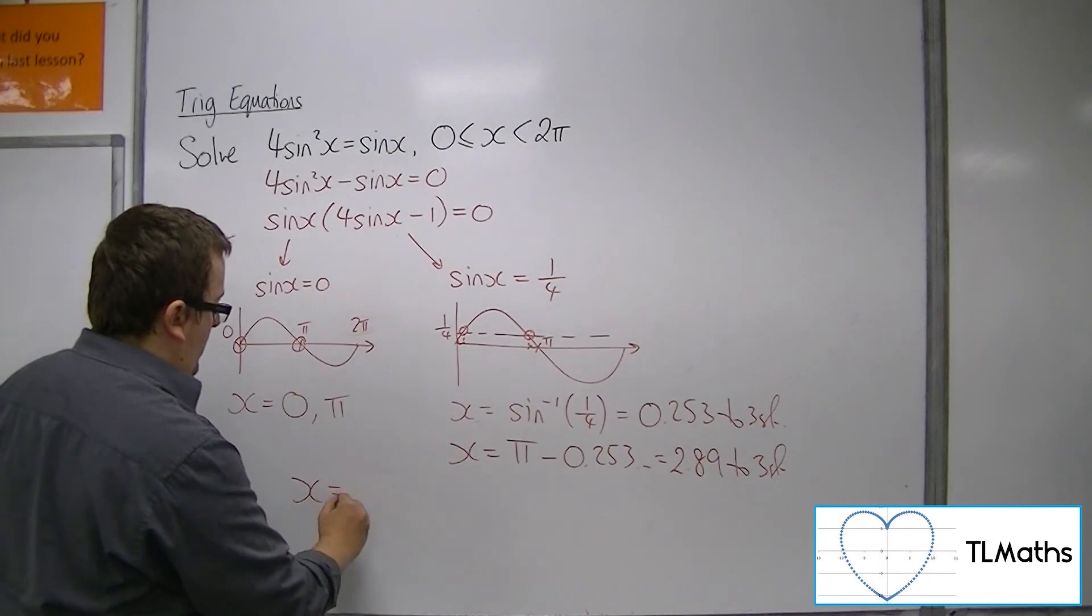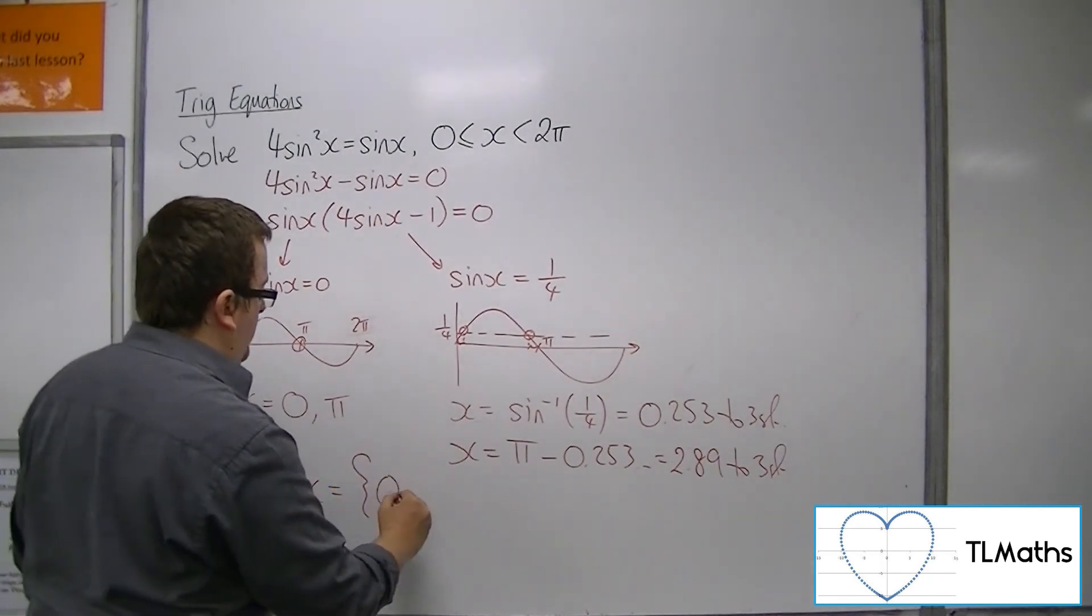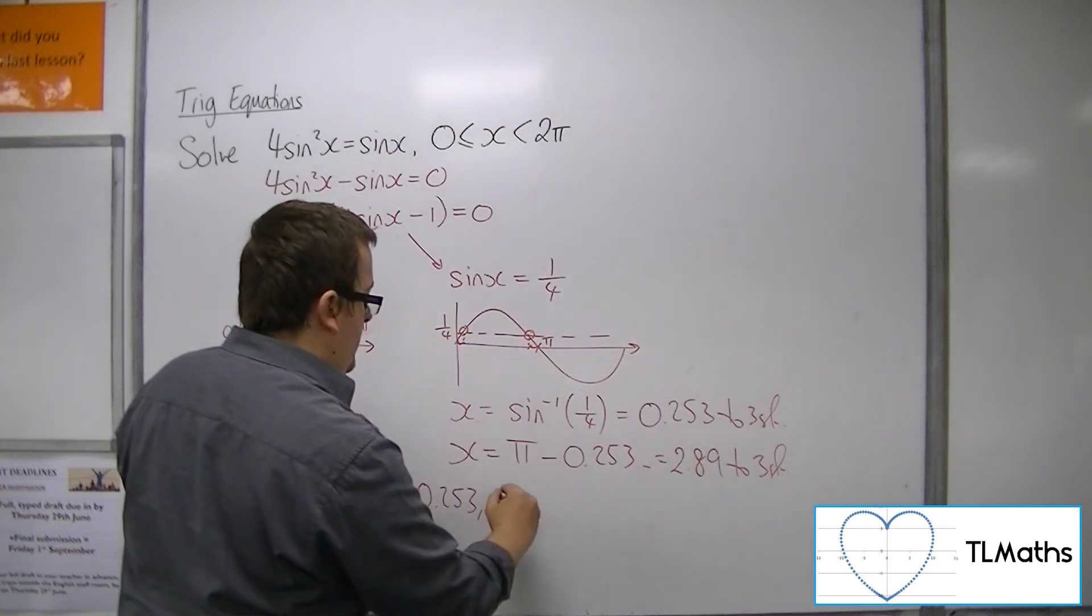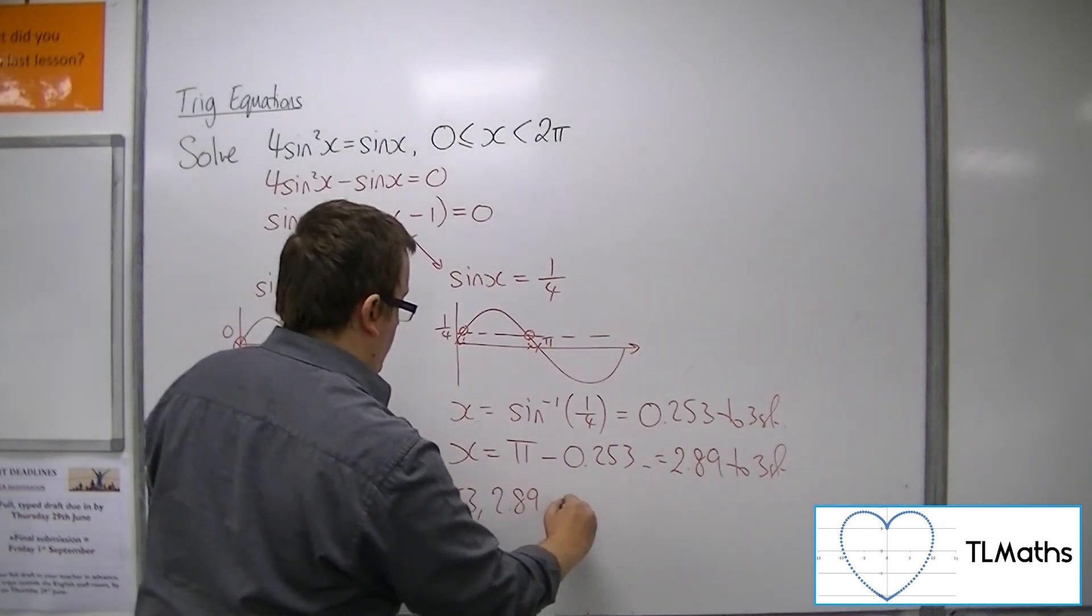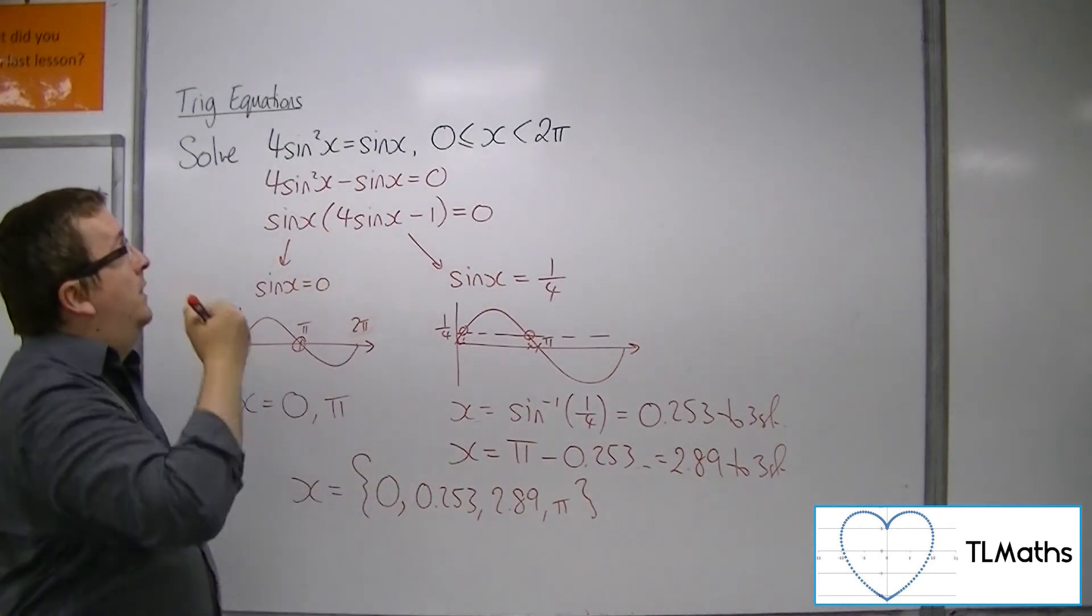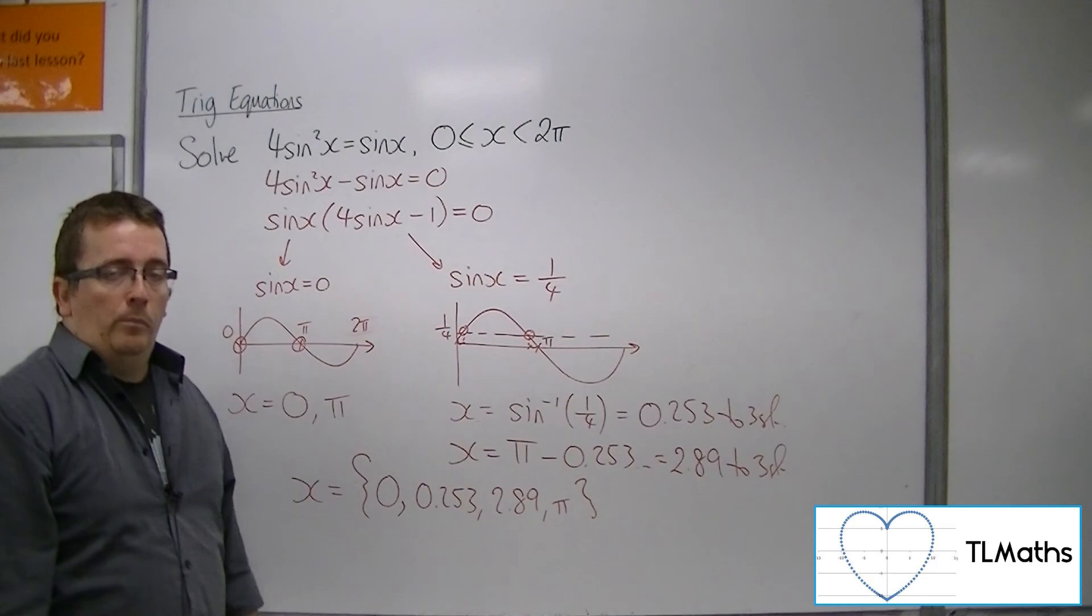And so we have the four solutions, 0, 0.253, 2.89, and pi. These are the four solutions to the original 4 sine squared equals sine x problem.